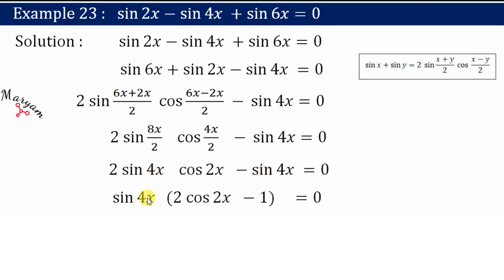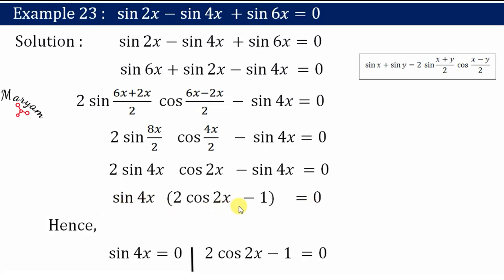We take sin 4x as common. What remains inside the bracket is 2 cos 2x − 1, so the equation becomes sin 4x (2 cos 2x − 1) = 0. We can now equate sin 4x = 0 and 2 cos 2x − 1 = 0 separately.